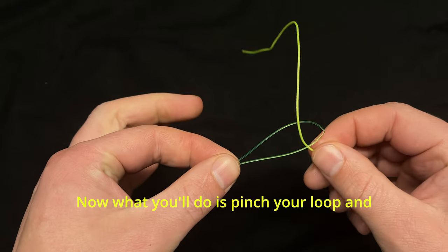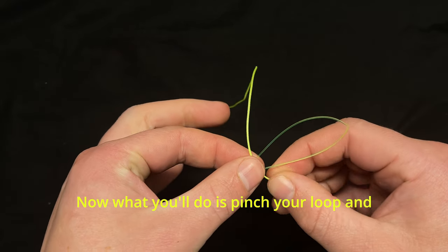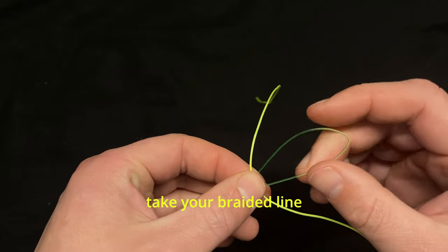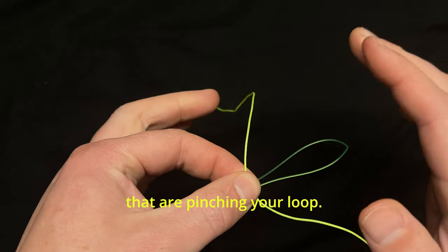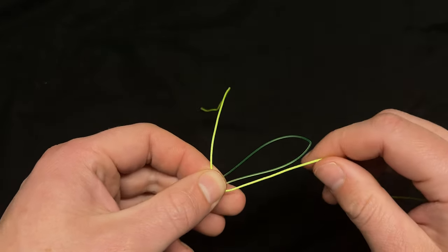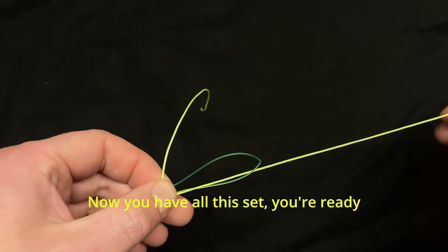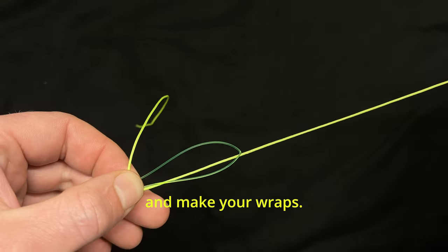Now pinch your loop and take your braided line and run it to your fingers that are pinching your loop. Now you have everything set and you're ready to go ahead and bring everything in line and make your wraps.